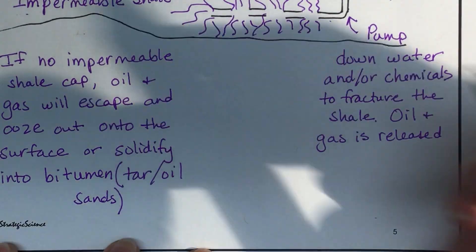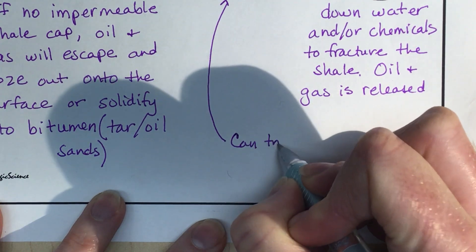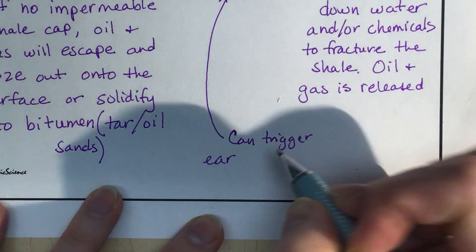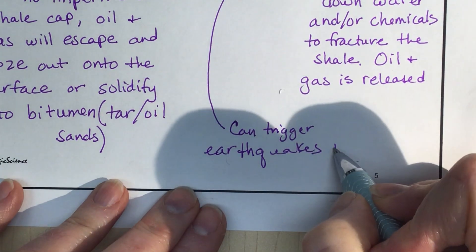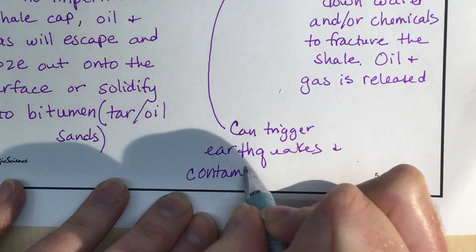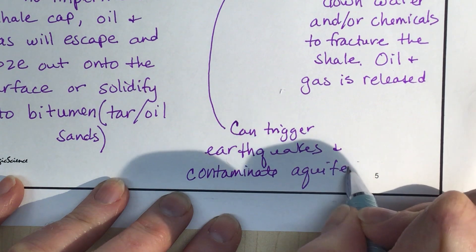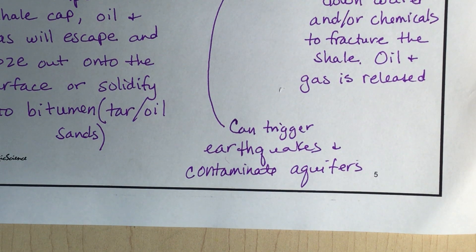Some of the problems with fracking include earthquakes. Oklahoma is a place with a huge amount of fracking, and it now experiences earthquakes where there were essentially none before. That's a drawback to fracking. The benefits are that it has allowed us to switch from coal to natural gas, which is the cleanest of the fossil fuels. It has also brought the price of energy down and provided jobs.